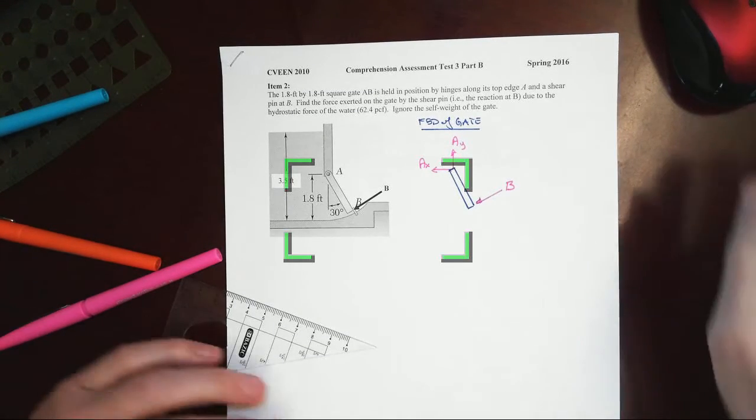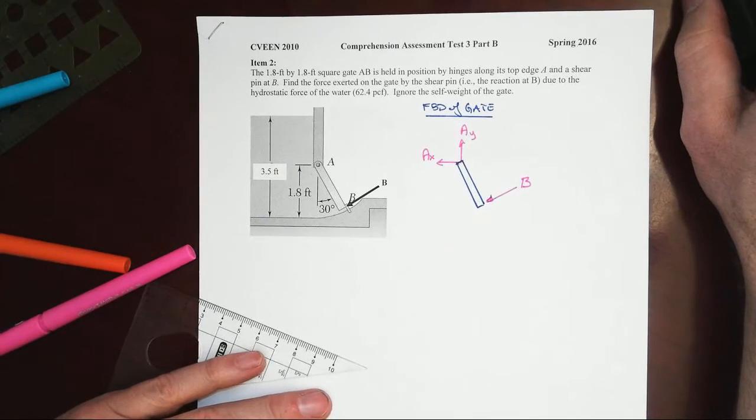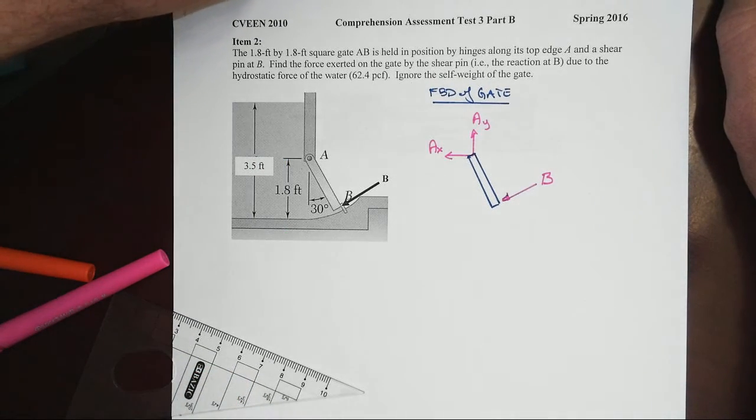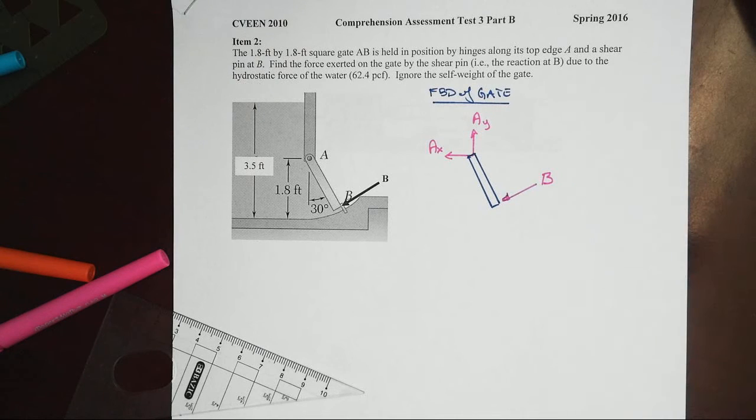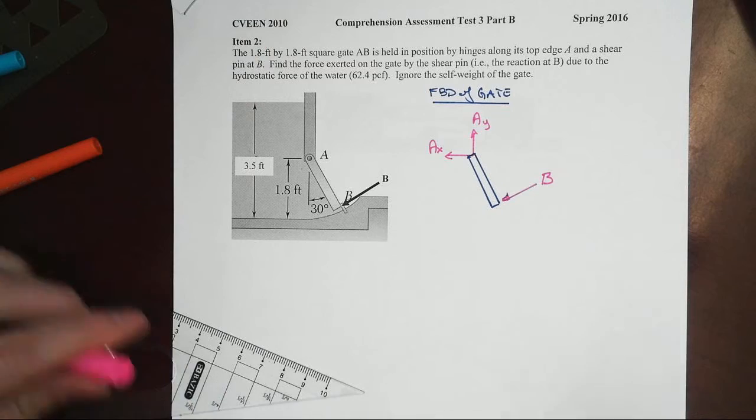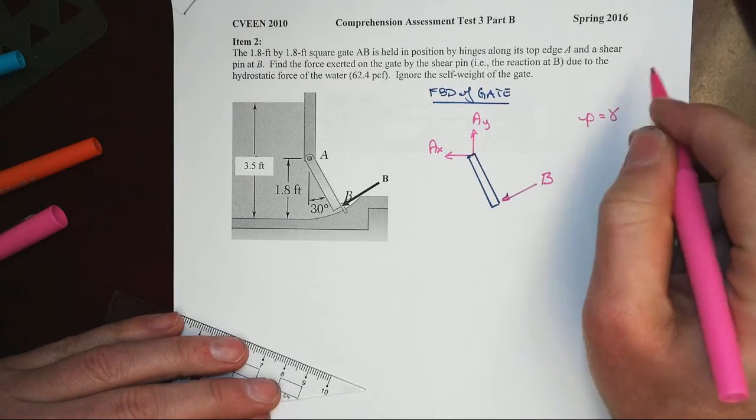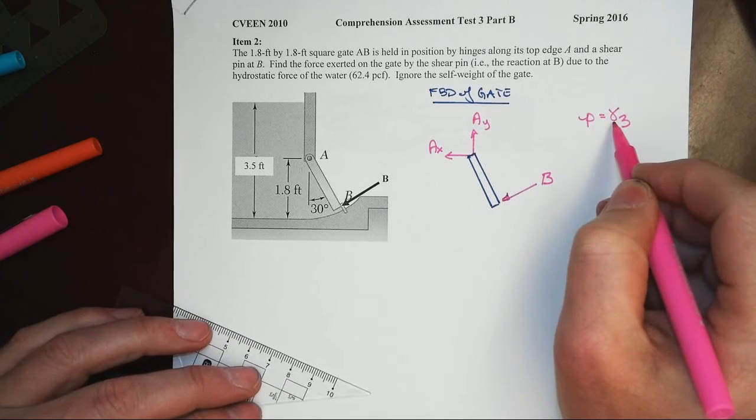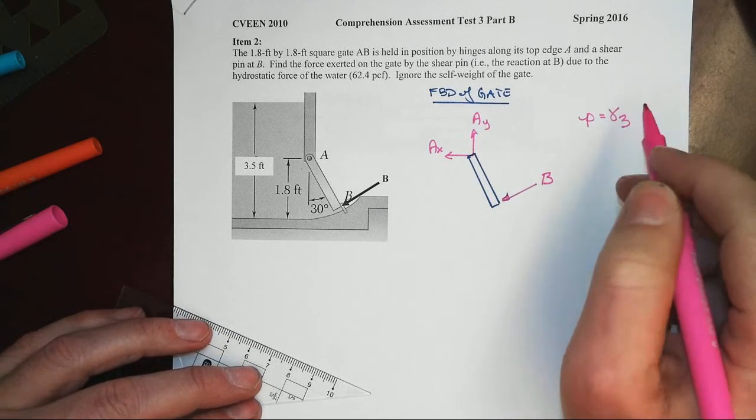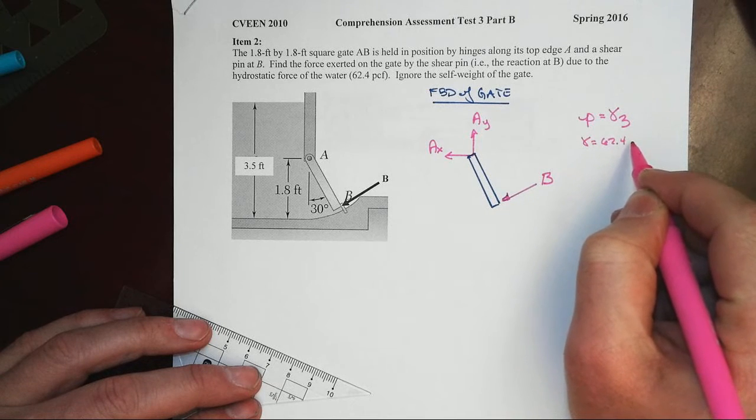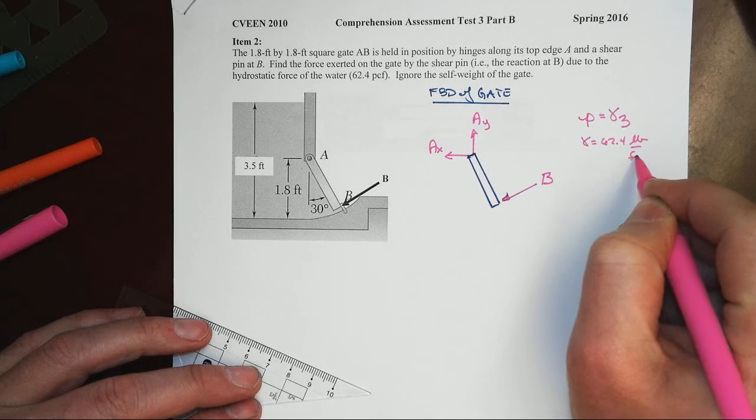In the second item we are asked to deal with hydrostatic forces and ultimately the reaction that is caused by hydrostatic forces on a gate. One of the keys is going to be that the pressure is going to be a function of depth in the water and that little funny symbol, the gamma, is our unit weight of 62.4 pounds per cubic foot.